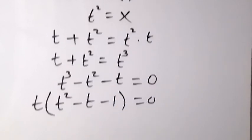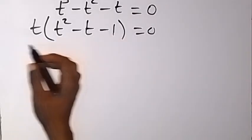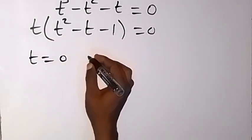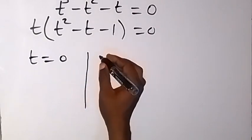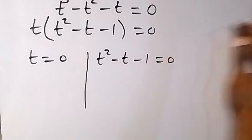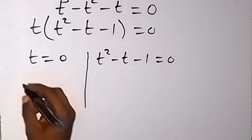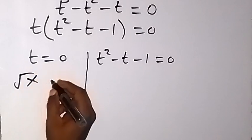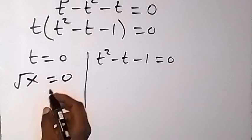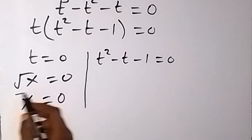We have two possible cases here since two numbers multiplying give zero. The first case: t = 0. The second case: t² - t - 1 = 0. From the first case, since t = √x, we have √x = 0. Squaring both sides gives x = 0.